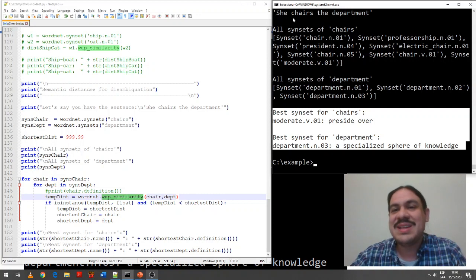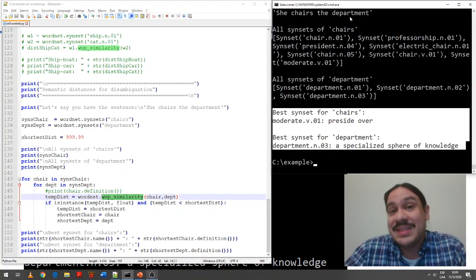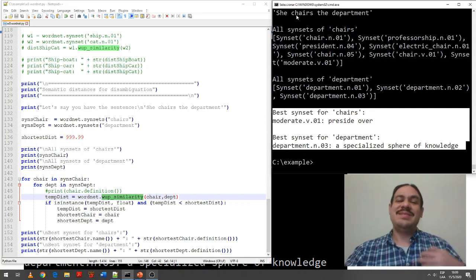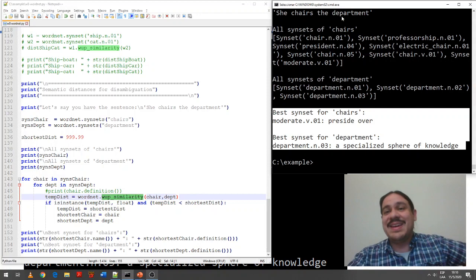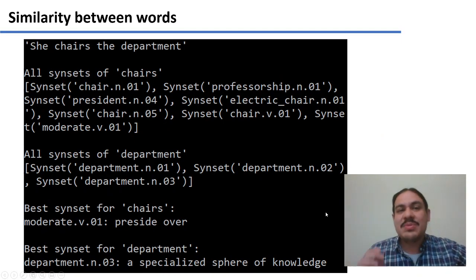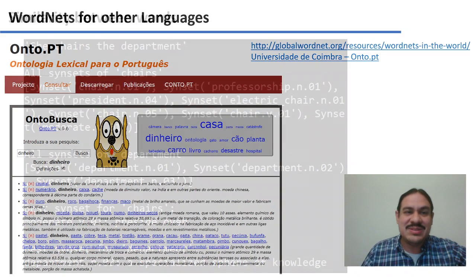So, she presides over a specialized sphere of knowledge is what the sentence actually means. It does not mean she seats with a holding for your back in a place that sells things. So, WordNet can help us figure out what are the actual meanings of the word that we need to understand the sentence.